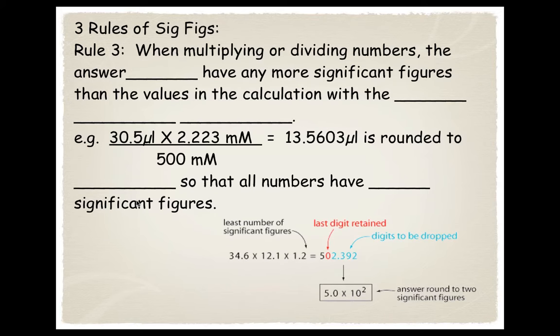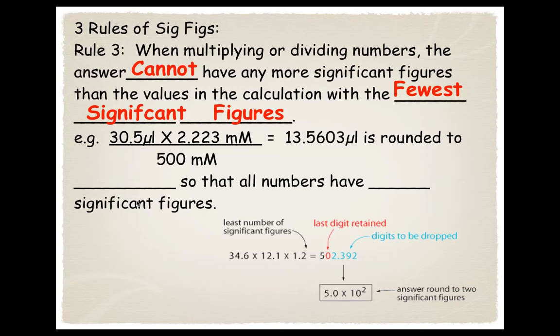When you multiply or divide numbers, the answer cannot have any more significant figures than the values in the calculation with the fewest significant figures.